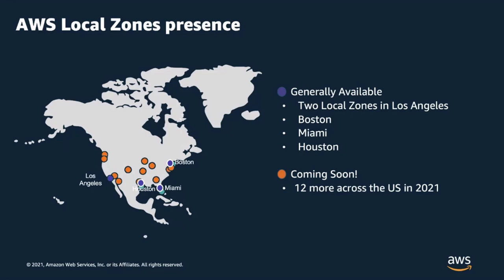Where are these Local Zones located? Until recently, developers could use Local Zones in LA for end users located in the Southern California region. However, developers outside of Southern California also want this capability. So we prioritized 15 additional locations based on inputs and latency coverage needs. Last month, we made three of these new Local Zones generally available in Houston, Boston, and Miami. We are also launching 12 more Local Zones throughout 2021, covering cities like Atlanta, Chicago, Dallas, and New York. With these new Local Zones, customers will be able to deliver single-digit millisecond latency to end users across the continental US.